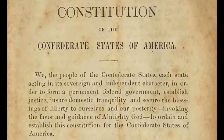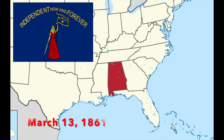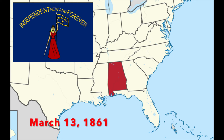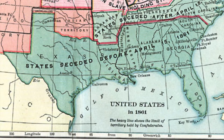The Confederate Constitution was pretty much the same as the Union Constitution; however, they wrote explicit protections of slavery. Alabama then became the first state to ratify the Confederate Constitution. Then, by April 12, 1861, every seceded state except for Florida had ratified the Confederate Constitution.